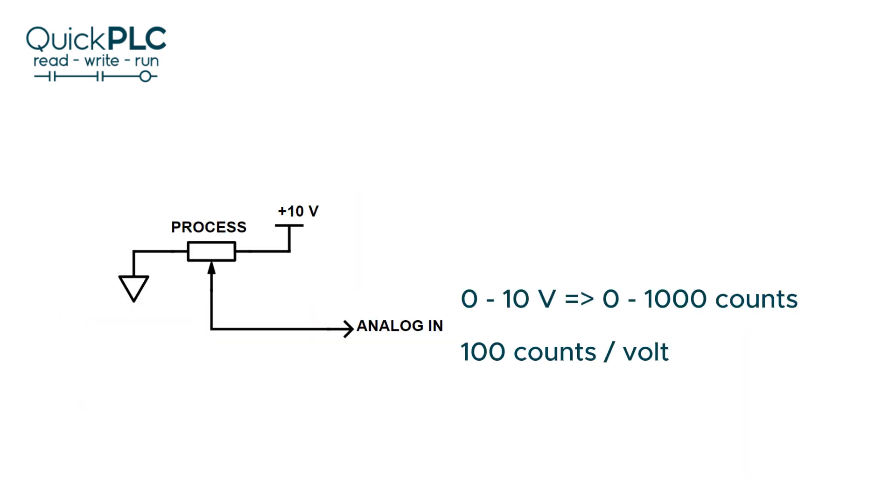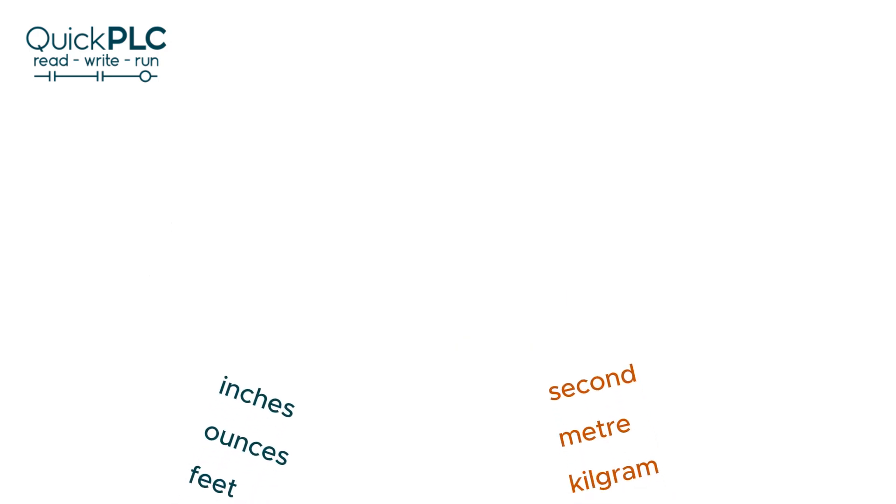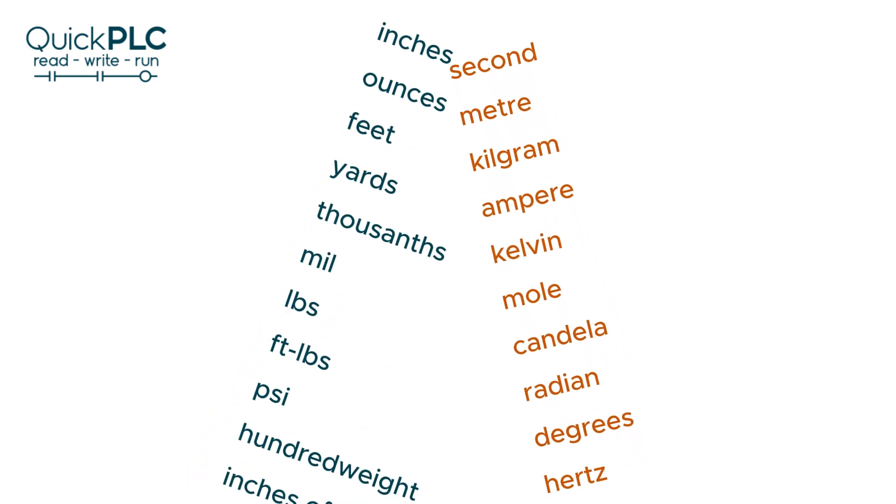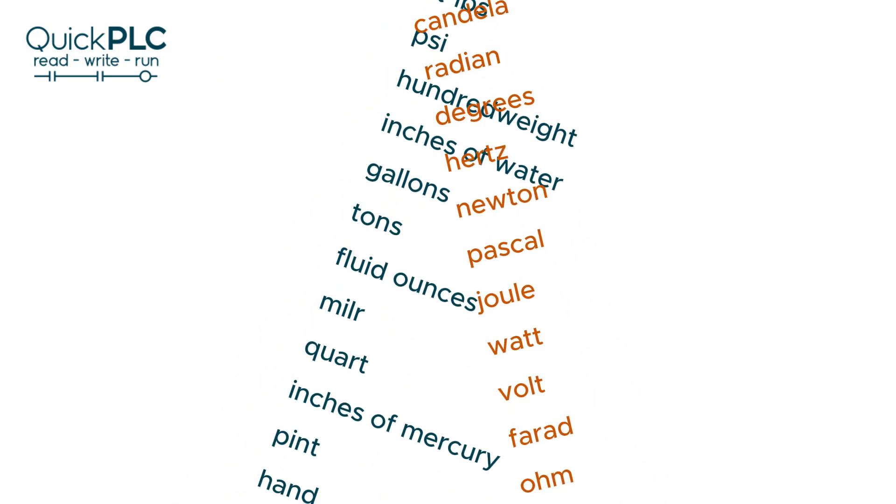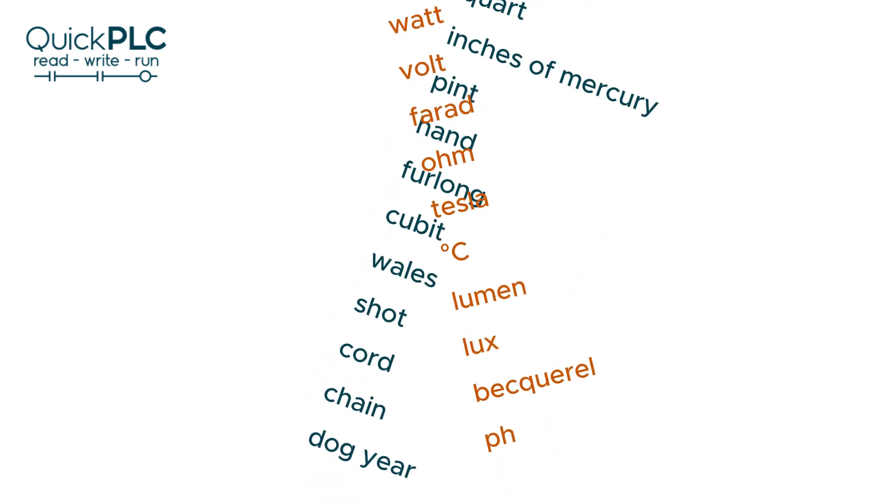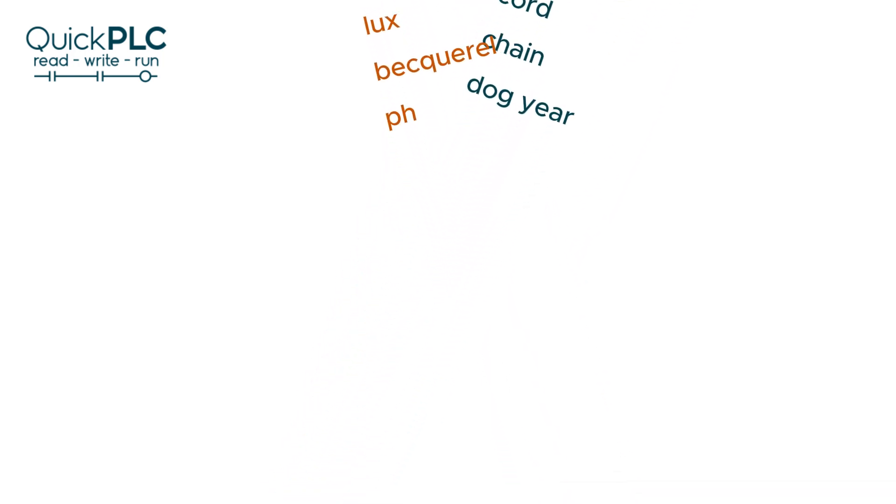The logo analog inputs convert 0 to 10 volt inputs to a digital value between 0 and 1000. While you can work with the raw digital value, it's usually desirable to convert to engineering units such as weight, distance, velocity, pressure, temperature, voltage, etc.